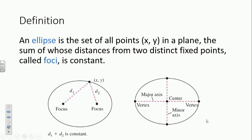The ellipse is a set of all points x, y in a plane, the sum of whose distances from two distinct fixed points — called foci — is constant. Foci is the plural of focus. d1 plus d2 will always be the same number, and it will be the length of your major axis.